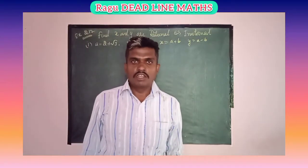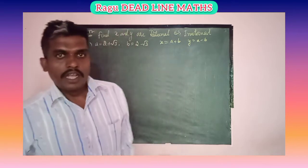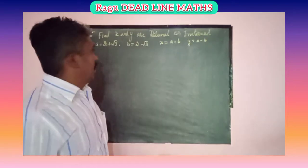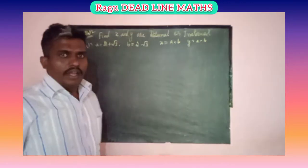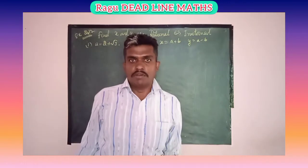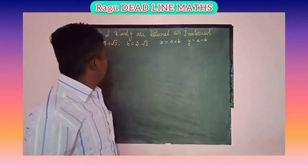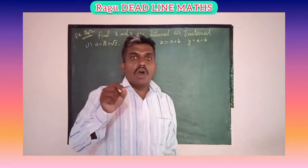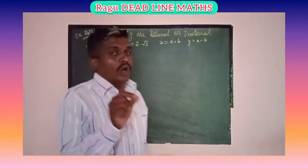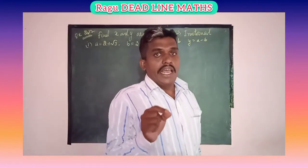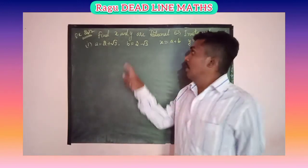Good morning. Today's video will cover Example 2.12 from the 9th standard real numbers chapter. The question is: given values, find whether x and y are rational or irrational numbers.